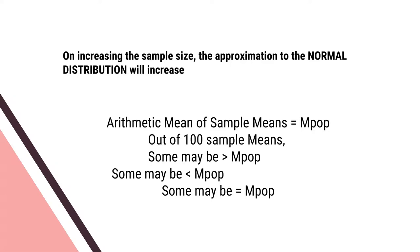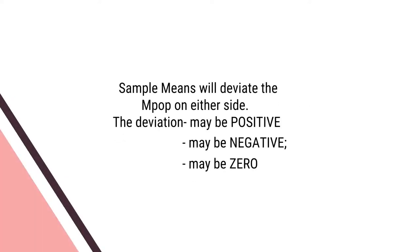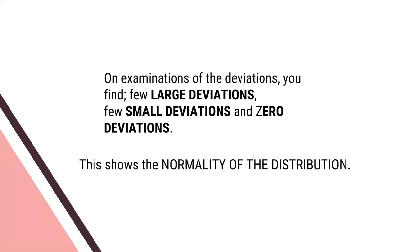The arithmetic mean of sample means is equal to the population mean. Out of 100 sample means, some may be greater than the population mean, some may be less than the population mean, and some may be equal to the population mean. The deviation may be positive if the sample mean is greater than the population mean, negative if less, and zero if equal. On examination, you find there are few large deviations, few small deviations, and a few zero deviations.